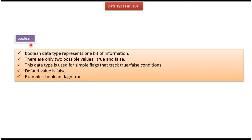Seventh data type is boolean. Boolean data type represents one bit of information. There are two possible values: true and false, and default value is false. Here you can see how to declare boolean.